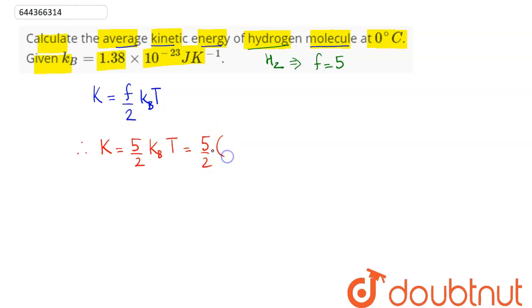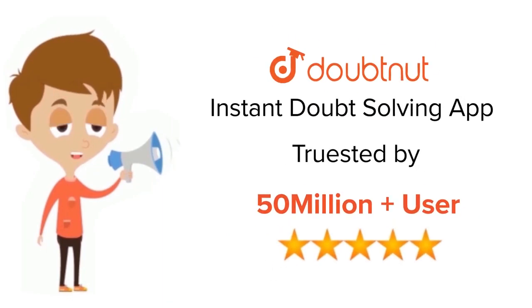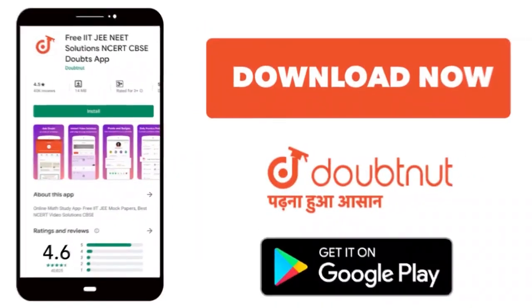So this here on simplification gives the average kinetic energy of hydrogen molecule as 9.41 into 10 raise to power minus 21 joule, which is at 0 degree Celsius. Hence this is our answer. For class 6 to 12, IIT JEE and NEET level, trusted by more than five crore students, download Doubtnut app today.